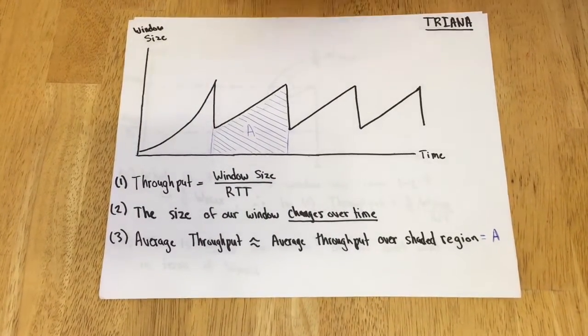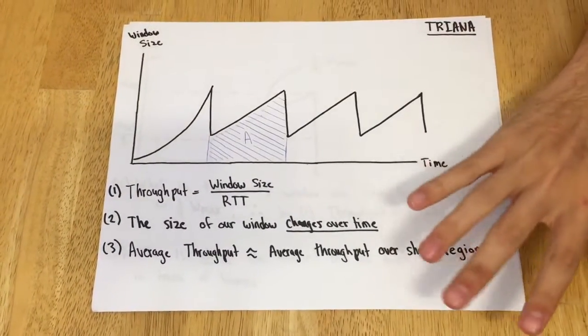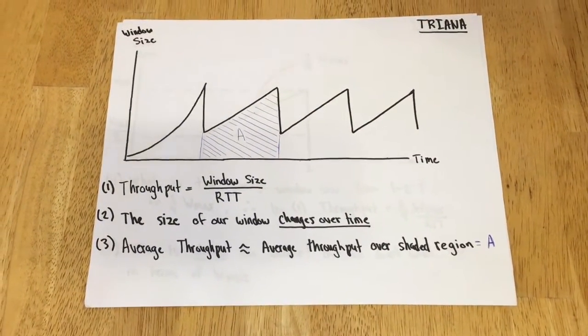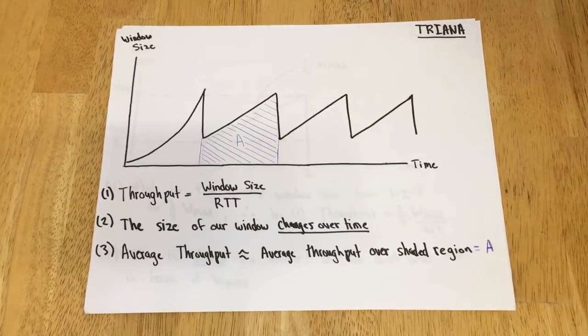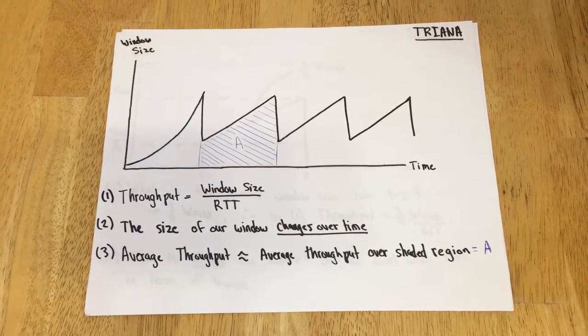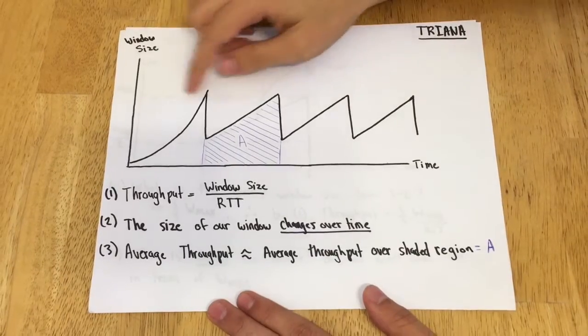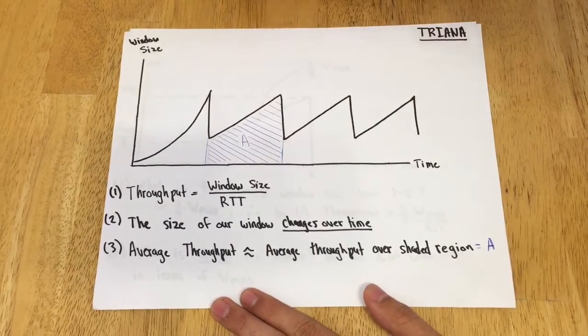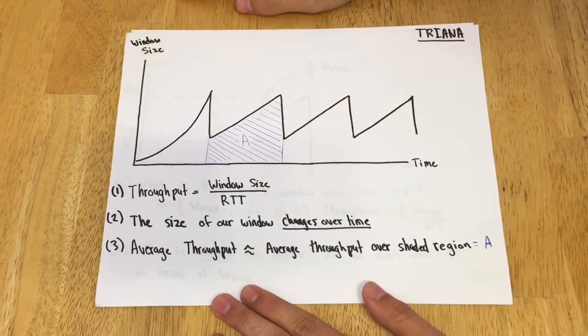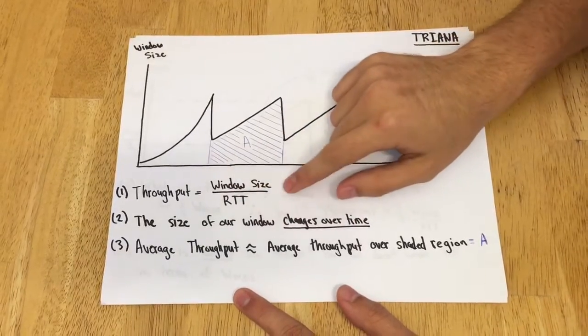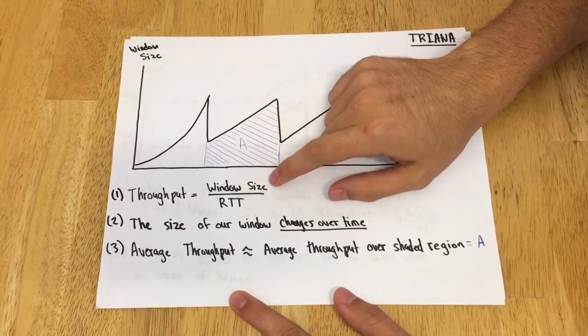Before the midterm, we talked about the throughput equation, which is basically the window size divided by an RTT. We've done problems with a fixed window size. The difficulty with this problem is that the window size clearly changes over time because of congestion control, so our calculations must take into account this dynamic window size.